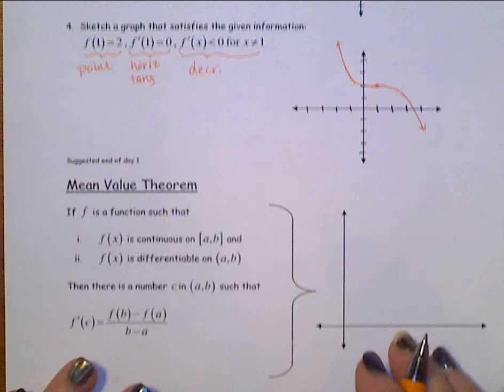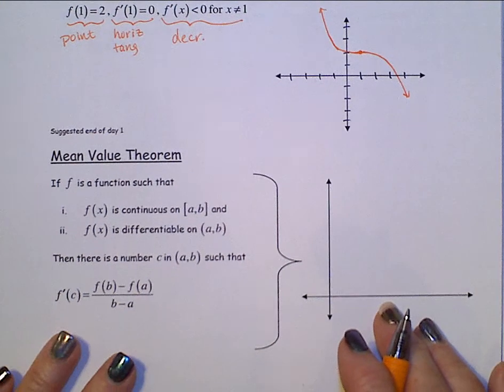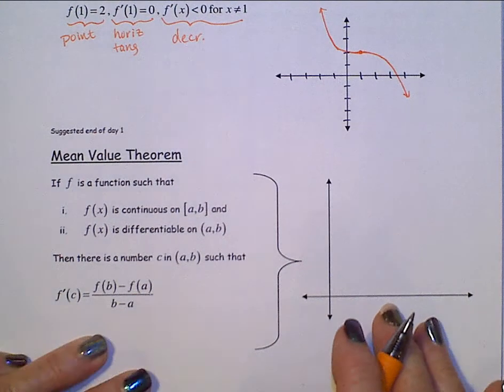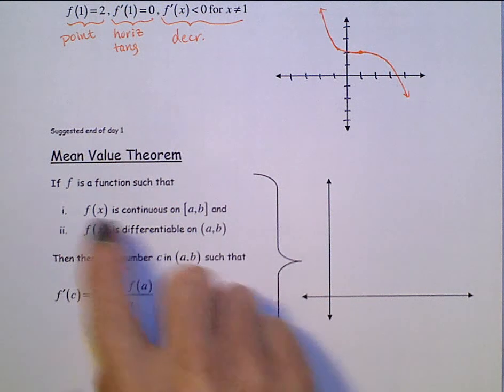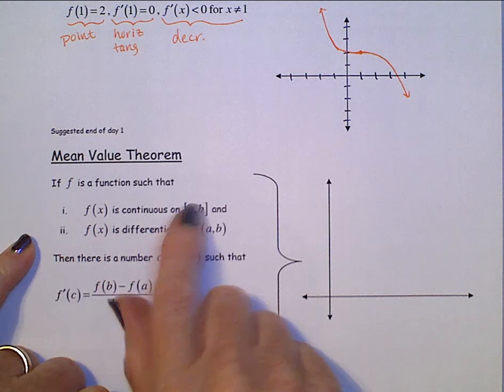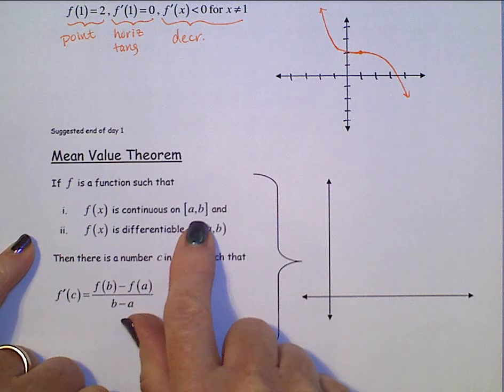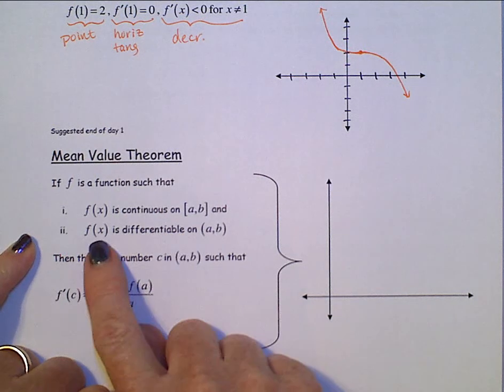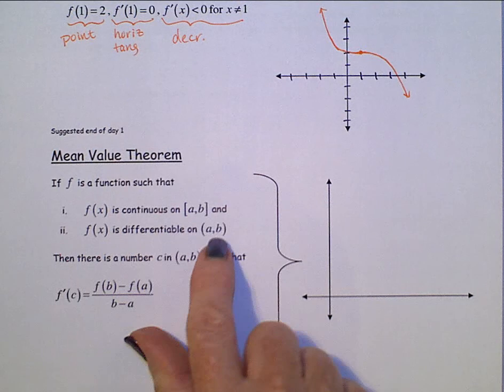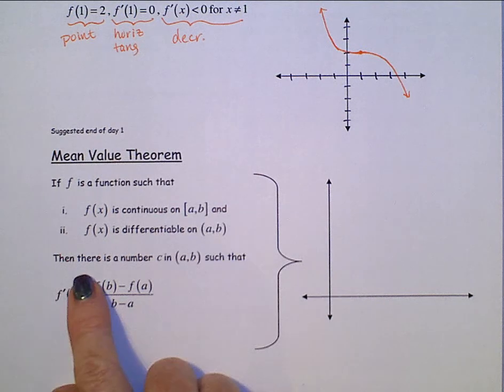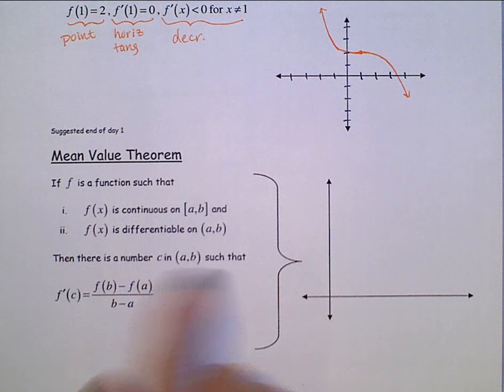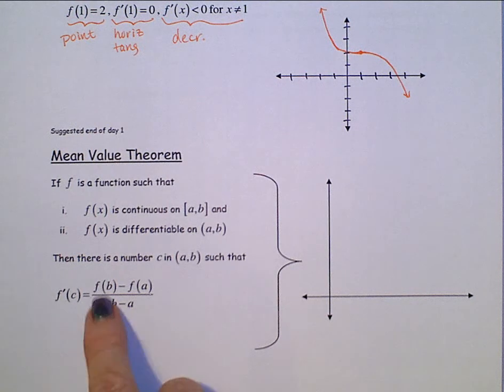Moving on, so I can finish this page on the same video. Mean Value Theorem. Mean Value Theorem says if f is a function such that f of x is continuous on some interval from a to b and f of x is differentiable on that open interval from a to b, then there is a number c in a, b such that, well, of course,